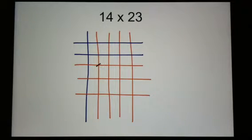1, 2, 3, 4, 5, 6, 7, 8, 9, 10, 11, 12. Now I'm going to count up my hundreds. That's where the blue crosses the blue, or 10 times 10. 100, 200. So I've got 200 over here.